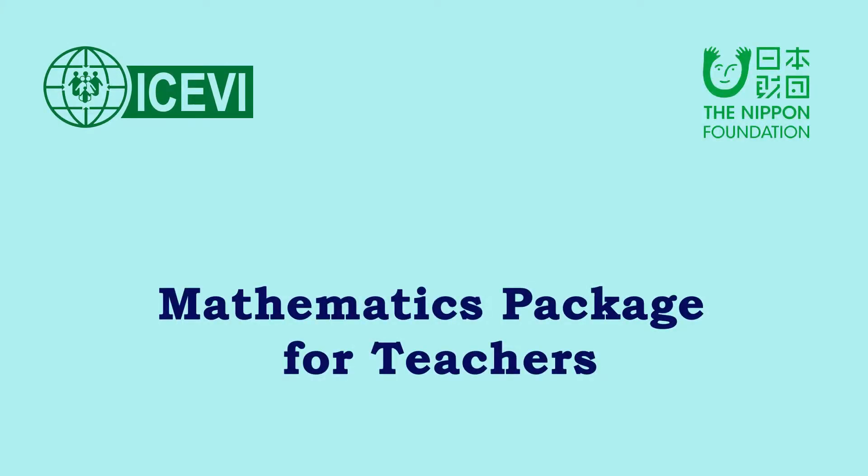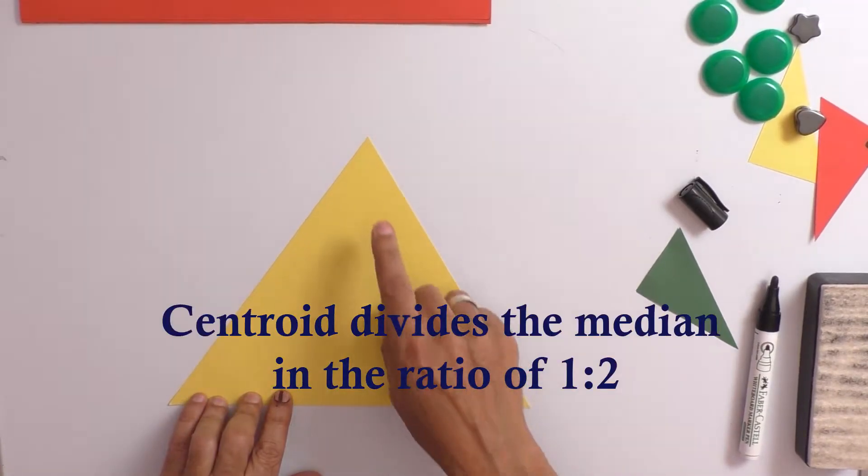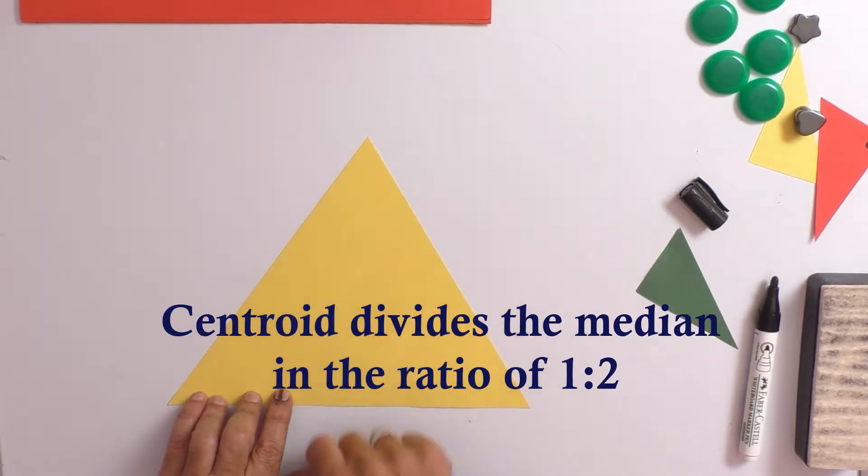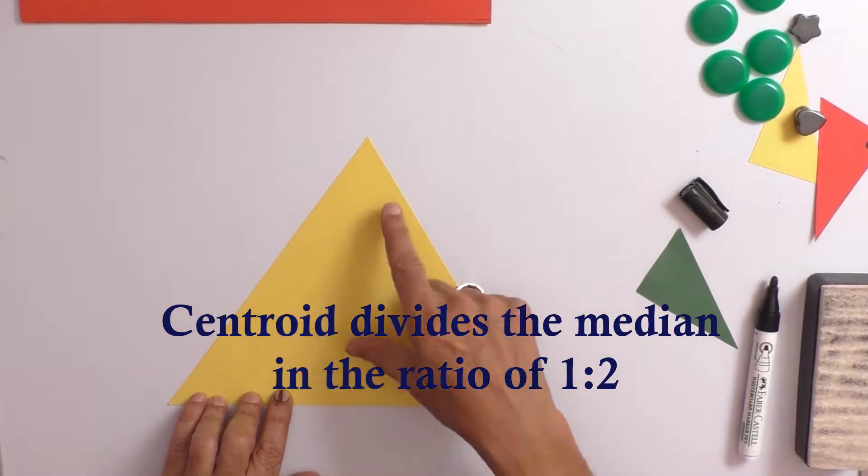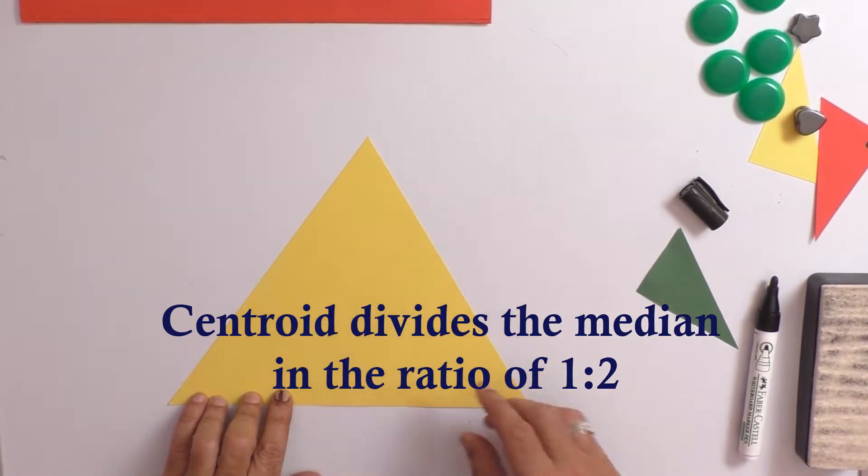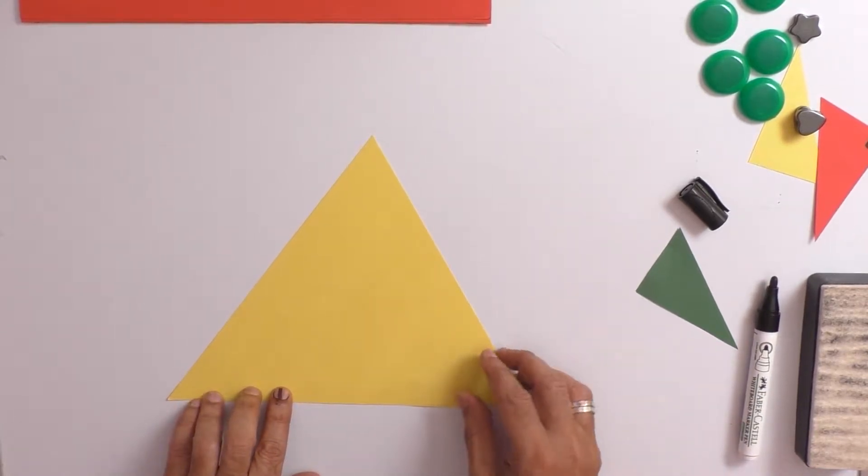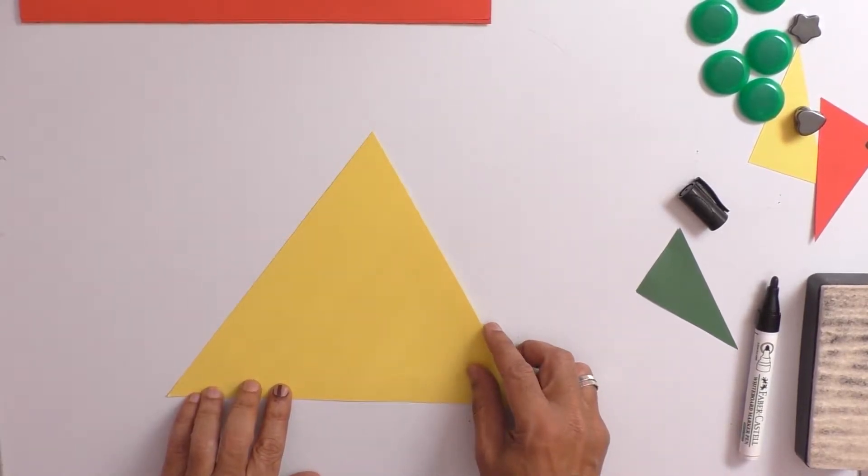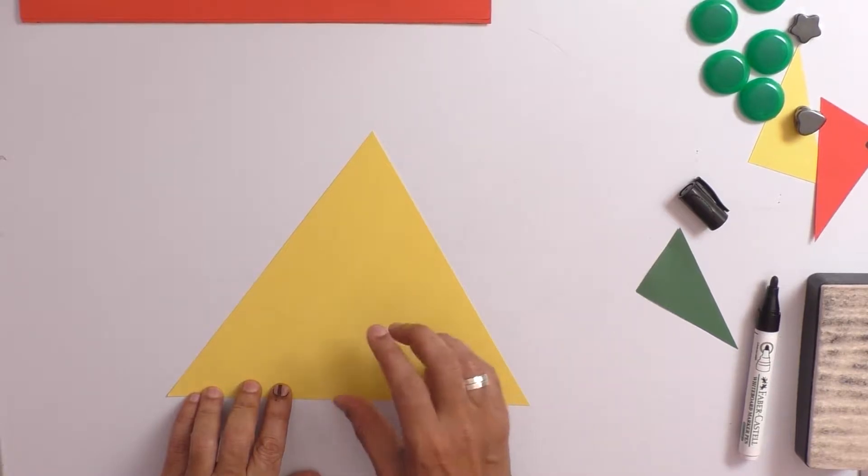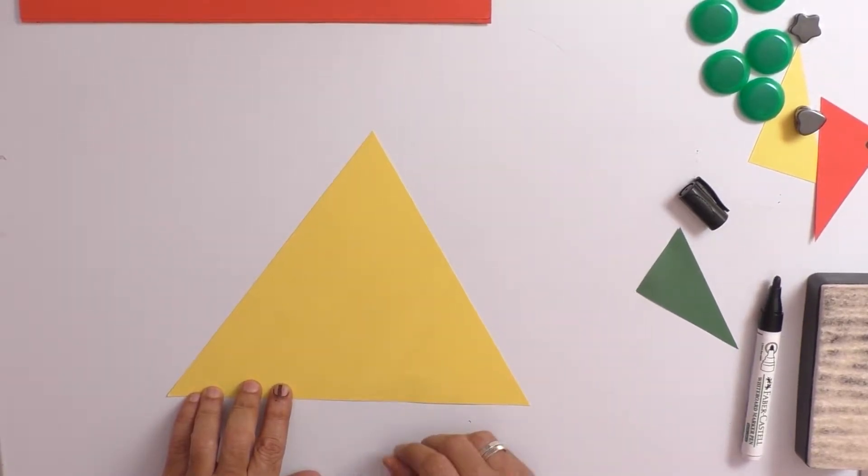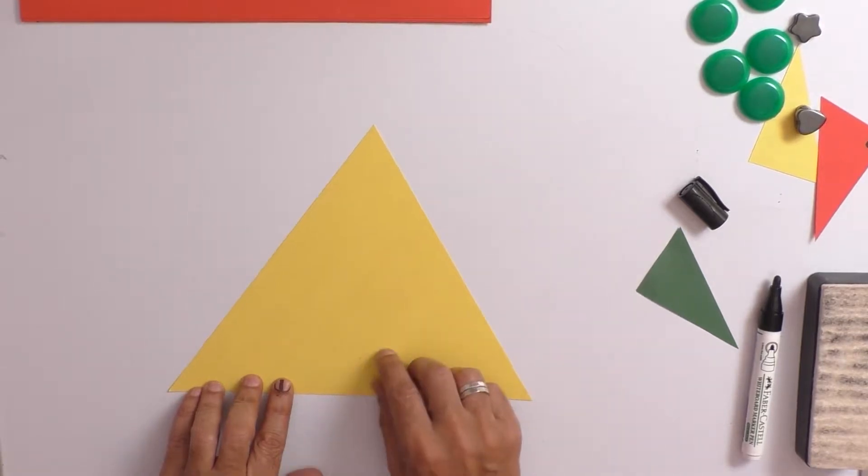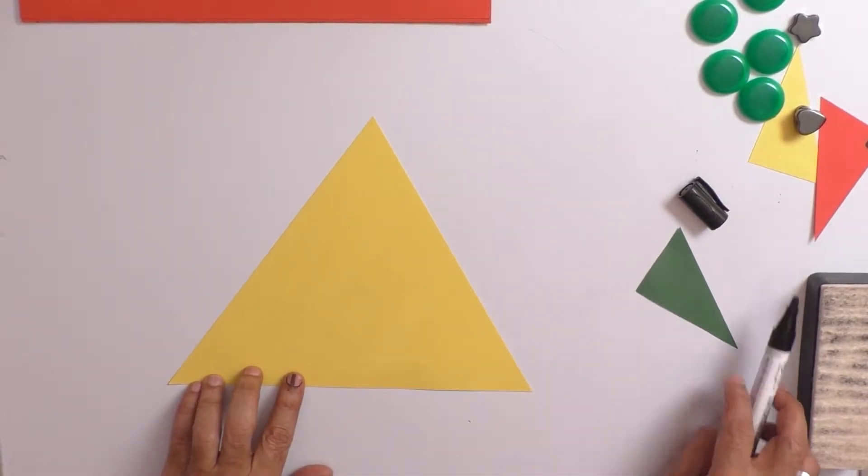The ICVI Nippon Foundation mathematics package for teachers. Title of the video: the centroid of a triangle. The centroid divides the median in the ratio of 1 is to 2. This looks like a very abstract concept, so let us prove this with very concrete experience.